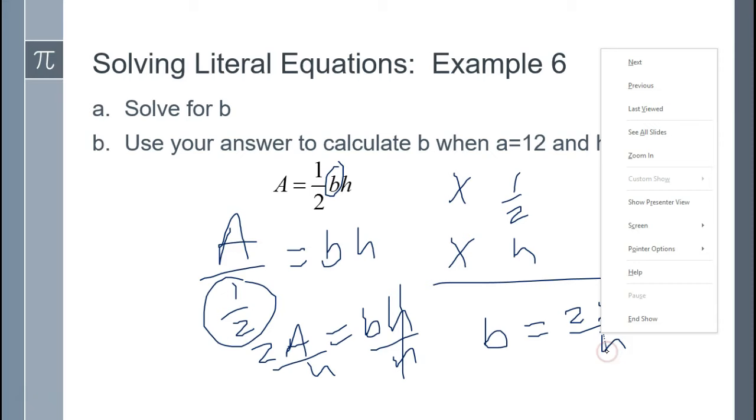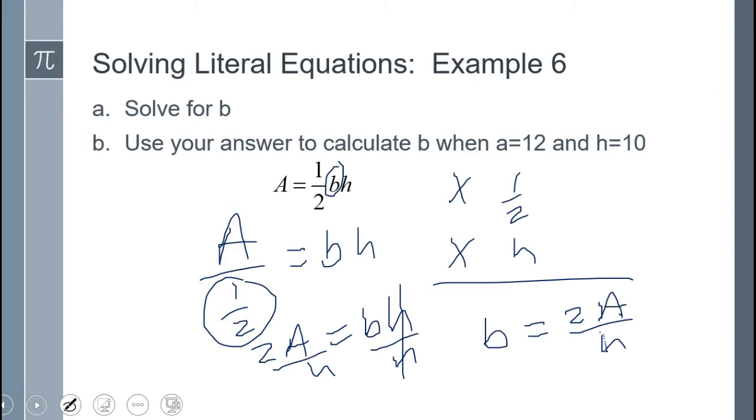If you had left it as A divided by half divided by h that would be correct but not nice. This is really how that one should end up. You should take care of the division by the fraction and make it simplified because it is easy to do. When you divide by a fraction you flip the bottom and multiply. So when I flip the bottom which is a half I get 2 over 1 which is just 2. That's where this 2A comes from.